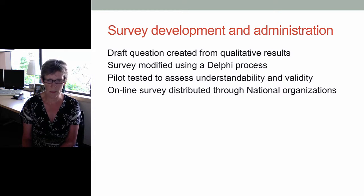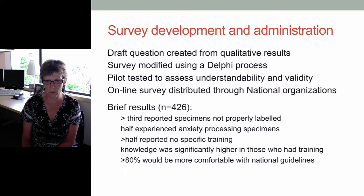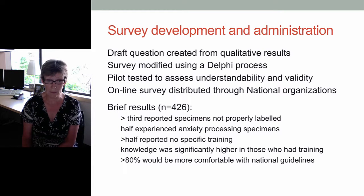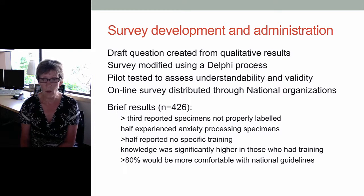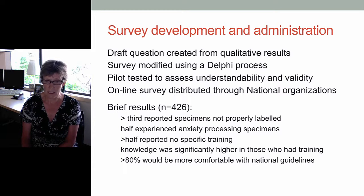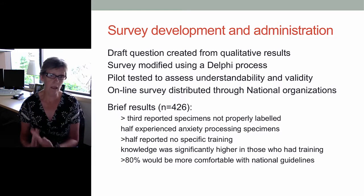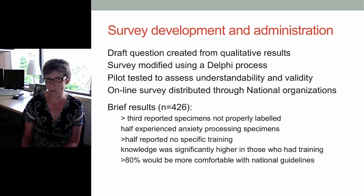We sent out the survey and had 426 usable results. A third of respondents reported specimens were not properly labelled. Half experienced anxiety processing the specimens. Over half reported they had received no specific training. Knowledge was significantly higher in those who had training — not surprisingly. Over 80% would be more comfortable with national guidelines. What this told us was that there were areas we could intervene to improve people's confidence in working with prion specimens — but before we started, we didn't know what the issues or the right questions were.